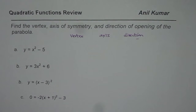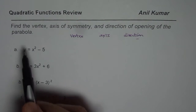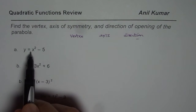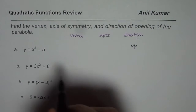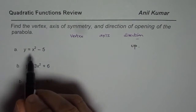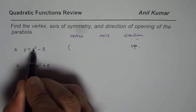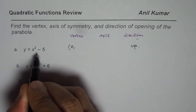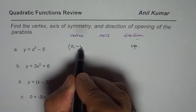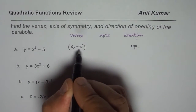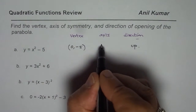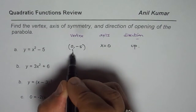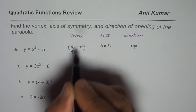Let's begin with the very first one, which is x squared. The coefficient here is positive, so it opens up. The vertex here is (0, -5) — you can see 0 and -5. The axis of symmetry is x equals 0, which is the x-value of the vertex.